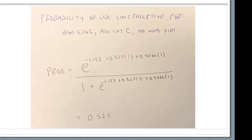To find the probability of using contraceptives for someone with high education, in age category c, and who does not want more kids: the probability is e to the negative 1.133 (the intercept) plus 0.325 times 1 (coefficient for high education) plus 0.9086 (coefficient for age category c), and x3 equals 0 since they don't want more kids. That's all divided by 1 plus e to the negative 1.133 plus 0.325 plus 0.9086.